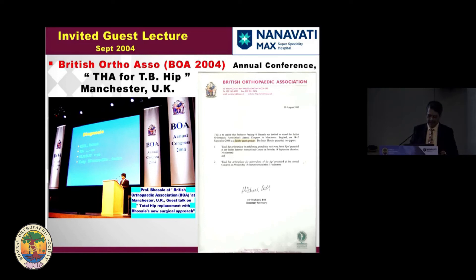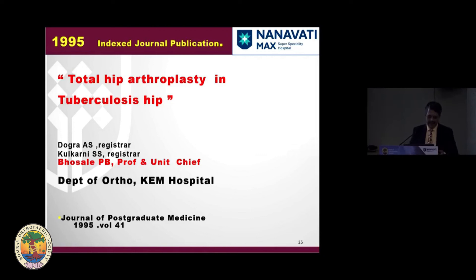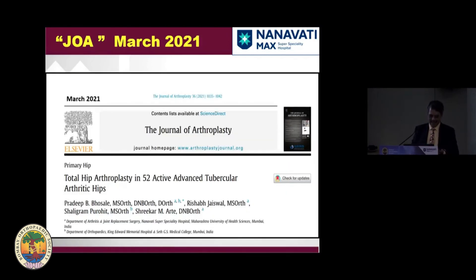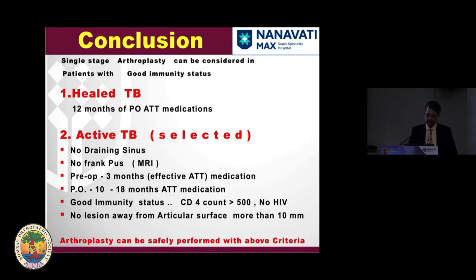I published on this topic in 1995 in a journal, and it was a great honor to be included in the 2021 Journal of Arthroplasty — everything is written in that chapter. In conclusion: it is possible if you select the case carefully and the patient shows good response to anti-TB medication. Follow those 10 commandments. In active TB, selected cases can undergo THR. For healed TB, always protect with post-operative anti-TB medication. No discharging sinus, MRI is a key pre-operative requisite, give 10 to 18 months of post-operative anti-TB medication, maintain good immunity with CD4 count monitoring, and the lesion should not be away from the acetabulum. Thank you.